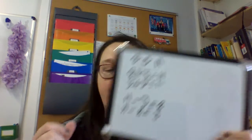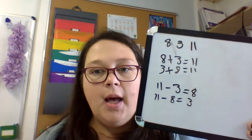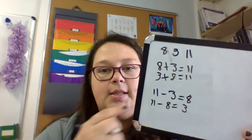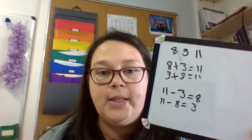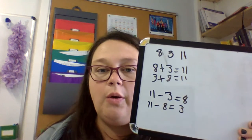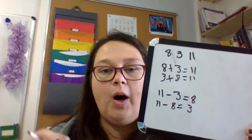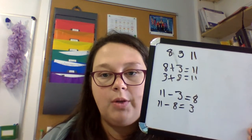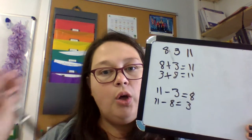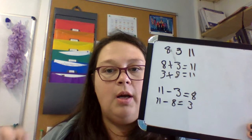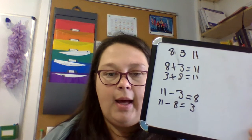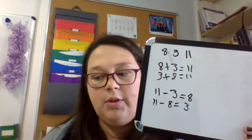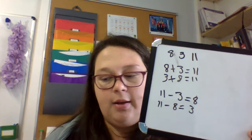When we write them like this, we call it a number sentence. A number sentence is how you write your fact family so that we can see that you understand how all three of those numbers go together — you're adding them, you're subtracting them, adding one side, subtracting the other.